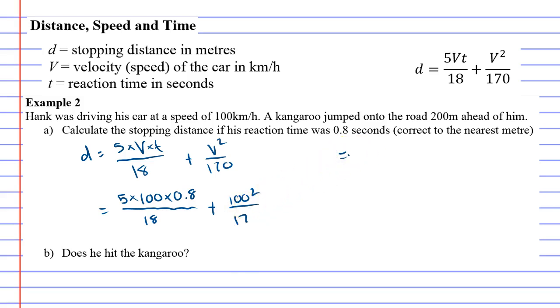All right, let's come over here. Maybe we can work it out in pieces. It works quite well if you do that. So we've got 5 times 100 times 0.8 which is 400, so we're going to have 400 over 18